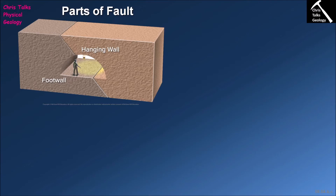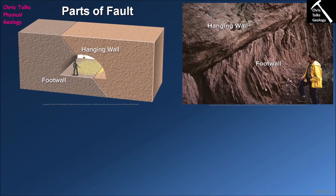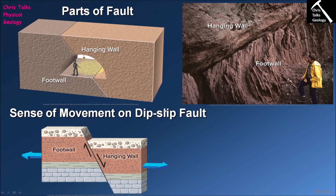When describing a fault we typically identify two parts: one is referred to as the foot wall and one as the hanging wall — these are old mining terms. The hanging wall is the block which is moving up or down relative to the foot wall block. In this instance, the upper portion of the fault plane is being pushed up over the lower portion, making the moving part the hanging wall and the stationary part the foot wall.